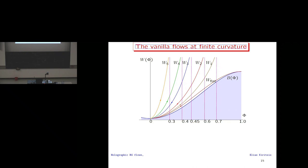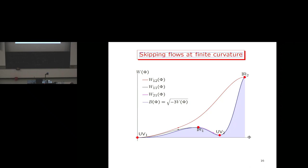Let me show how vanilla flows look with curvature. For a potential with one maximum and one minimum, the flat-space flow ends at the maximum (IR fixed point). Adding a little curvature moves the endpoint slightly toward the UV. Increasing curvature moves it further, and as script R → ∞ the endpoint returns to the original UV fixed point — as expected from standard QFT intuition.